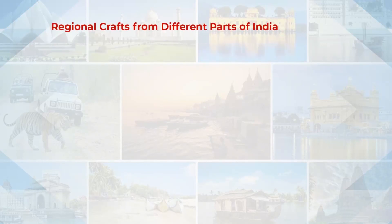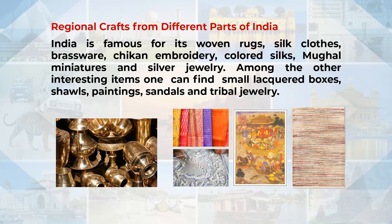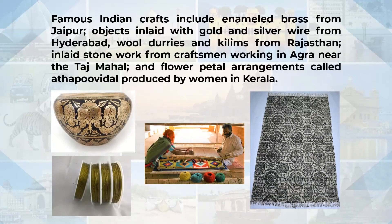Now let's discuss regional crafts from different parts of India. India is famous for its woven rugs, silk clothes, brass ware, chicken embroidery, colored silks, Mughal miniatures and silver jewellery. Among other interesting items, one can find small blackwood boxes, shawls, paintings, sandalwood and tribal jewellery. The famous Indian crafts include enamel brass from Jaipur, objects inlaid with gold and silver wire from Hyderabad, wool daris and kilims from Rajasthan, and inlaid stonework from craftsmen working in Agra near the Taj Mahal.